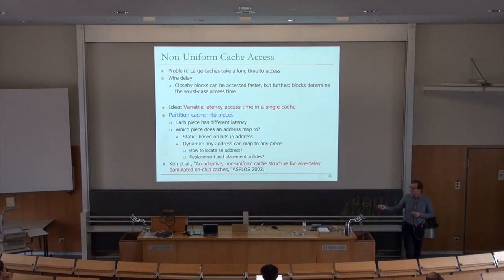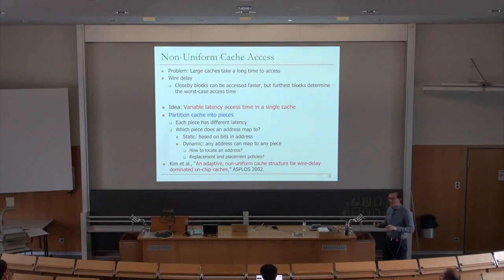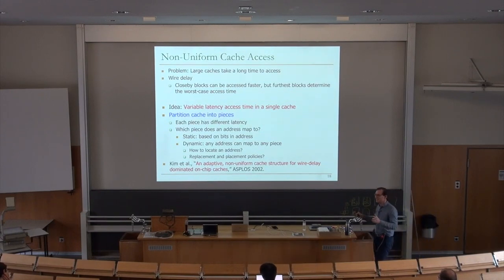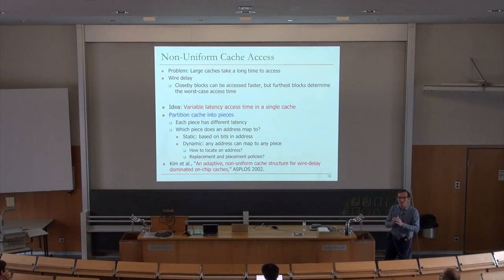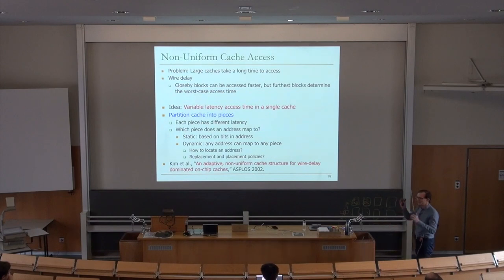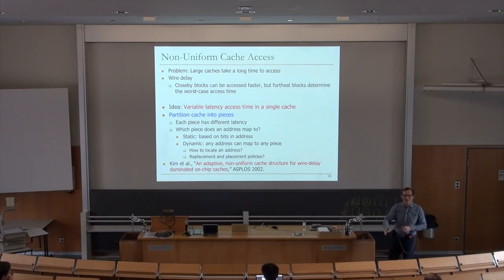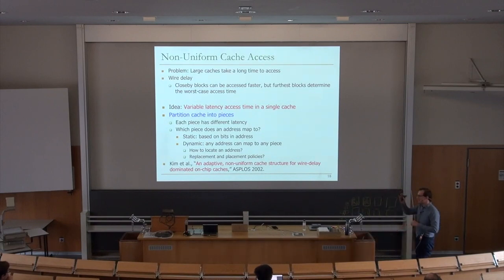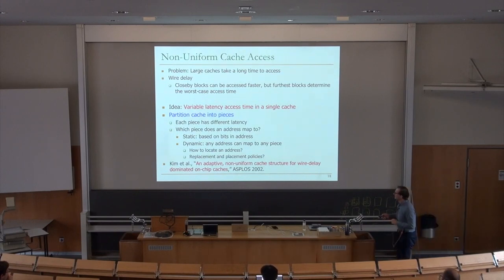The paper that first introduced non-uniform cache access latency is mainly motivated by wire delay. Access latency is a lot of the time dominated by your interconnect — there's no way to transport data across a large structure without a long interconnect.